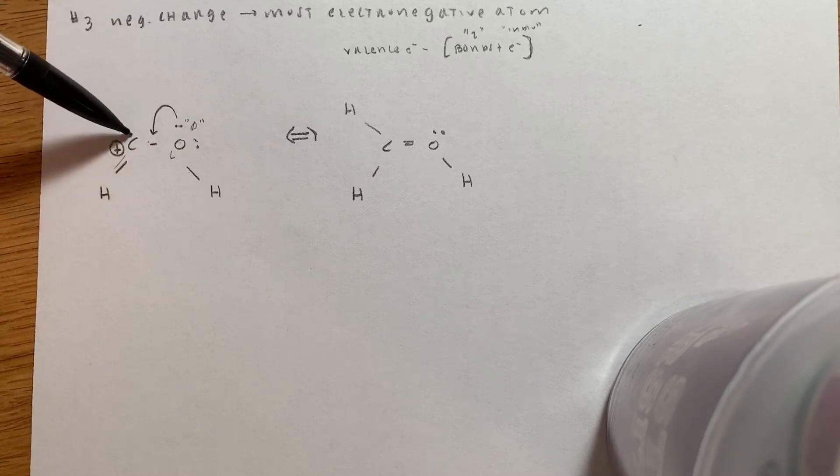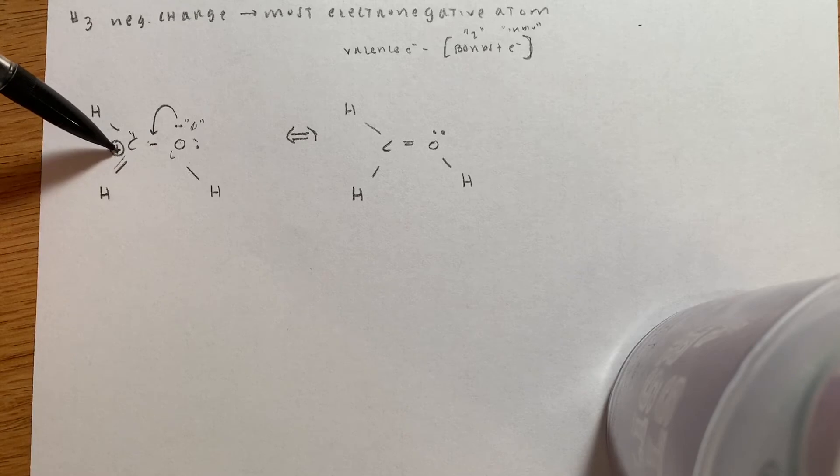This carbon has four valence electrons minus one, two, three. So that's why it has this plus charge right here.